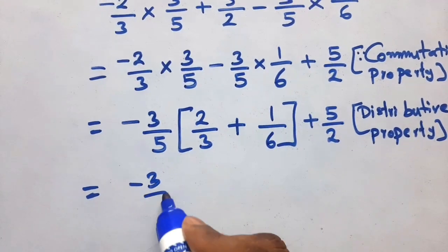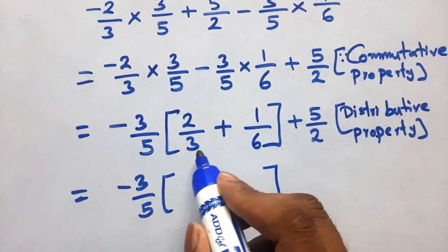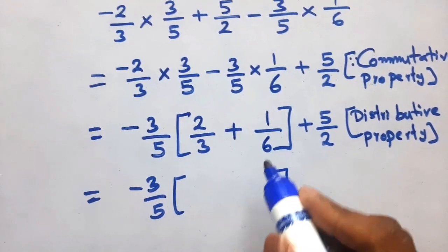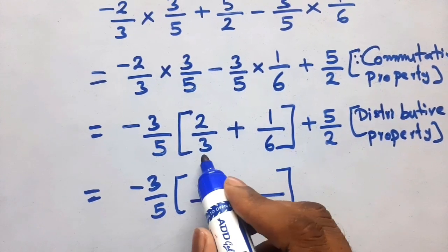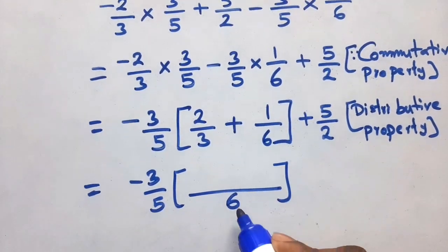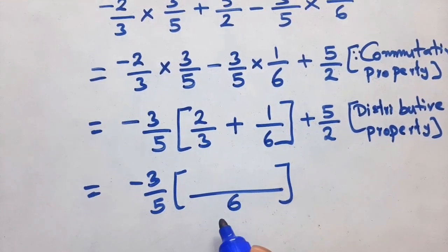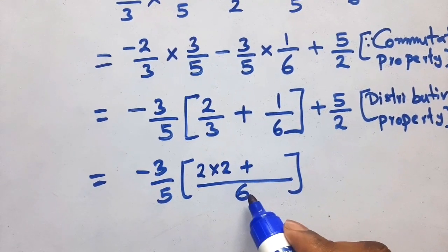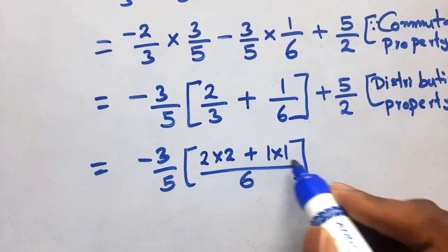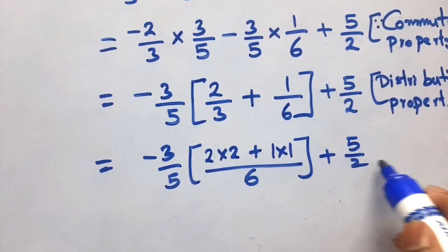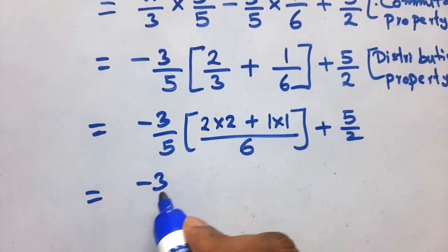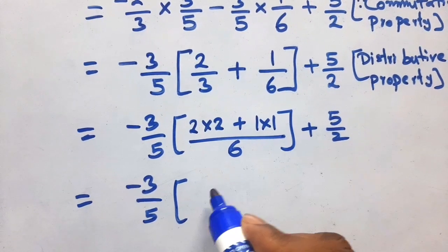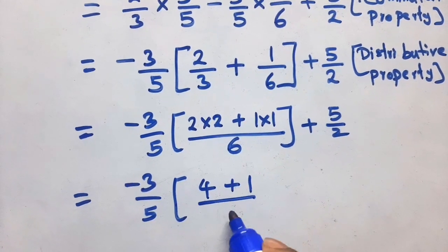Minus 3 by 5 into bracket — the denominators 3 and 6 are there. LCM of 3 and 6 is 6. Three divides 6 two times: 2 into 2, write 4. Six divides 6 one time: 1 into 1, write 1. Plus 5 by 2. Simplify: 4 plus 1 by 6 gives 5 by 6.